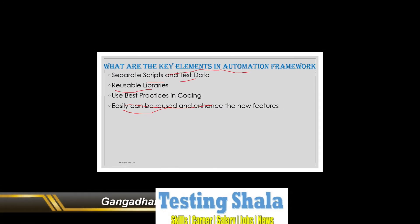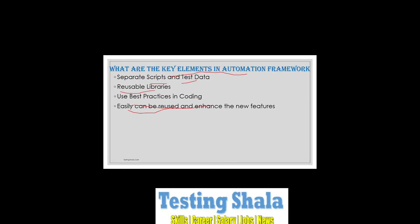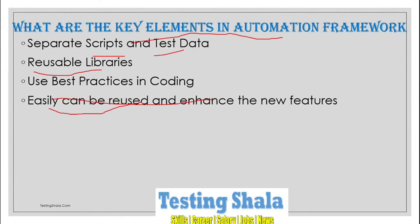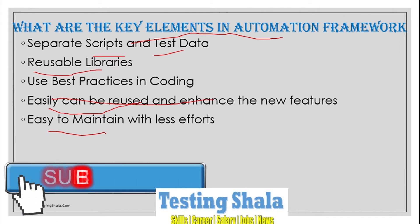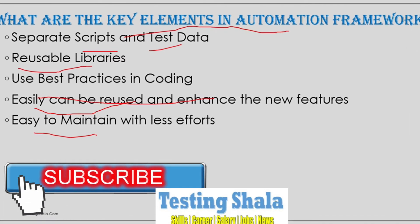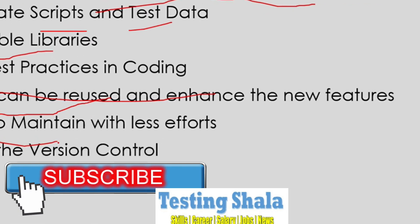We can develop new features as well. Using the automation framework, we should be able to maintain the overall things with less effort, and the automation framework should have version control.